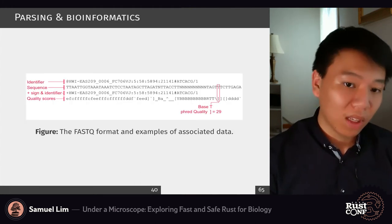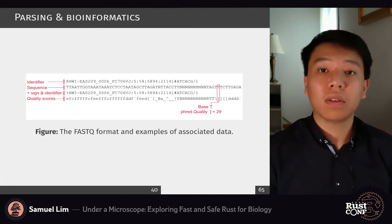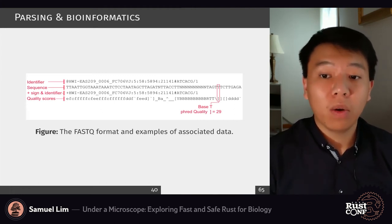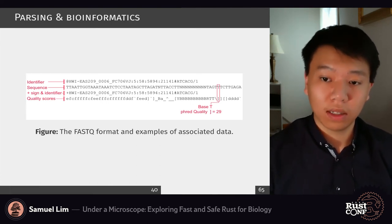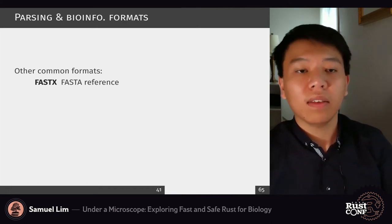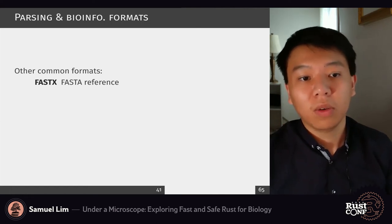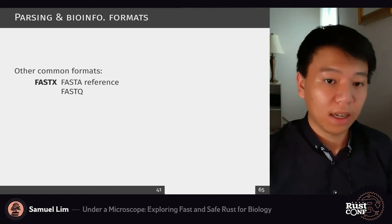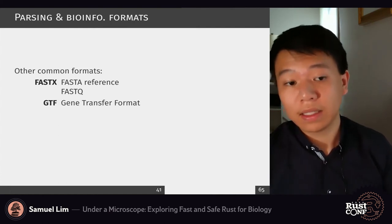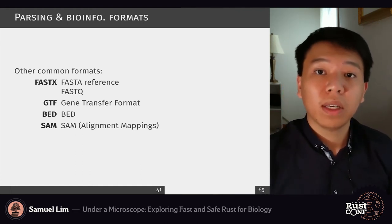One example would be the FASTQ format, where we take in not only the sequence information — crucial to our analysis — but also the identifier, the quality scores so we know how well this is sequenced or how erroneous it is. This is not the only format viable for computational biology and RNA sequencing; we have quite a few, whether it's FASTA for genome and transcriptome, FASTQ for experimental fragments, GTF for annotations, BED, or files containing calculated alignments.